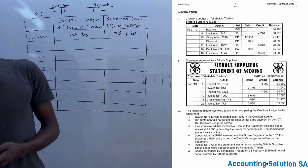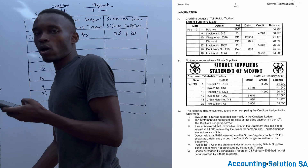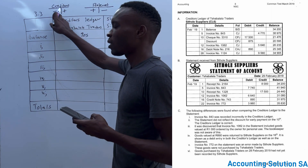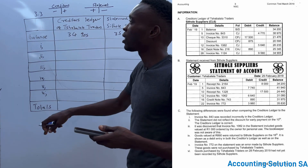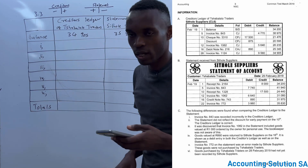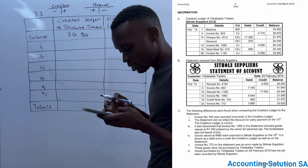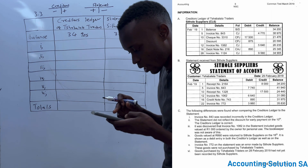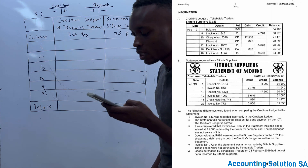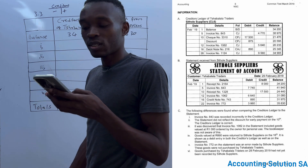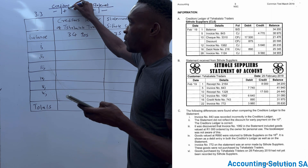Number one: Invoice 843 was recorded incorrectly in the creditors ledger. You need to know that in the creditors ledger, increases are on the credit side and decreases on the debit side — the statement does the opposite. Invoice 843 was recorded as R4,770, but if you check the statement it was supposed to be R7,740, so less amount was credited in the creditors ledger.